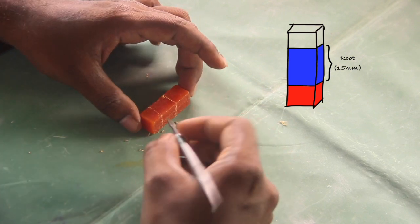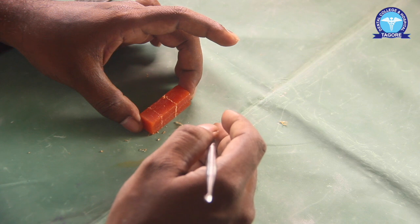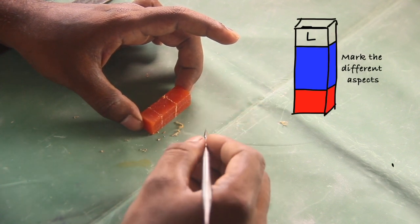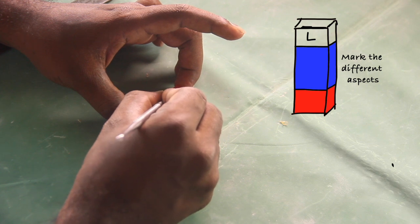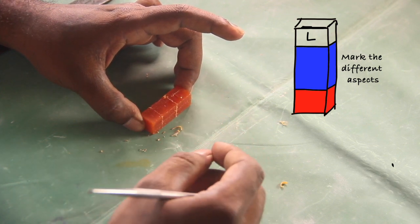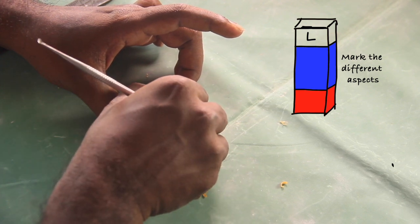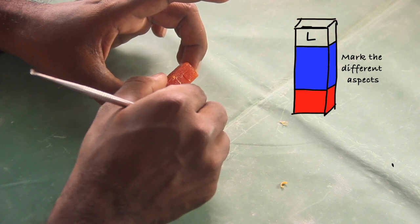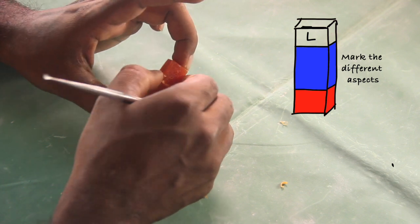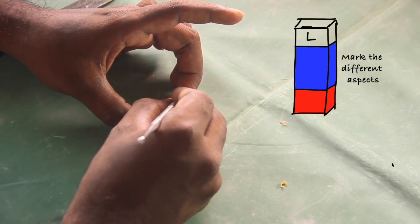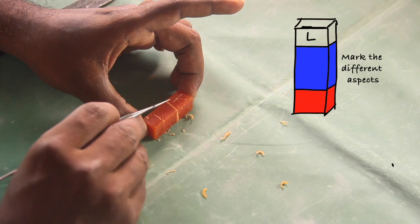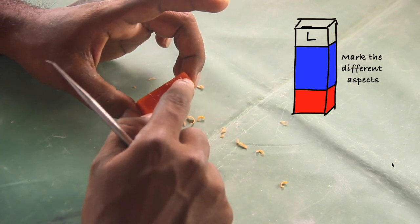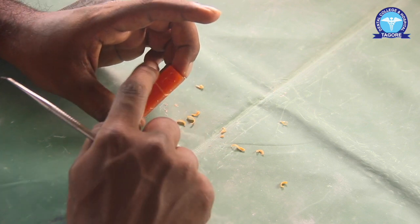Roughly divide the block into crown and root. The next step is to mark the buccal side, lingual side, mesial side, and distal side. The buccal side is otherwise called the labial side — mark it as 'L'. Since we are carving the right maxillary central incisor, make sure to mark mesial and distal properly. The exact opposite side of the labial is the palatal side — mark it as 'P'. Marking labial, palatal, mesial, and distal is a very important second step.